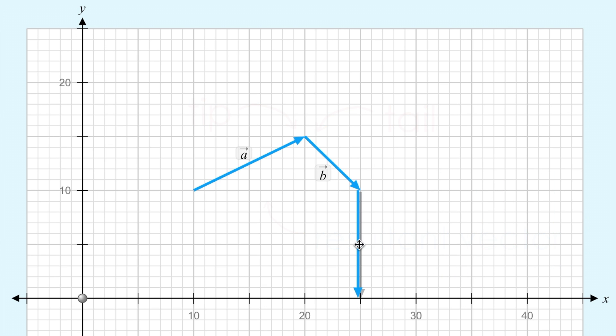If I apply the same tip-to-tail logic to add this third vector, I should be able to place the tail at the tip of the previous vector, B. And what I end up with is a geometric representation of A plus B plus C.